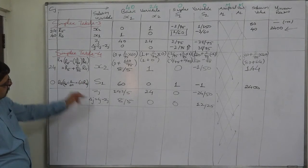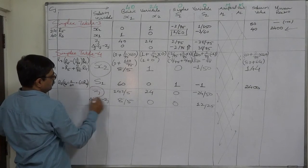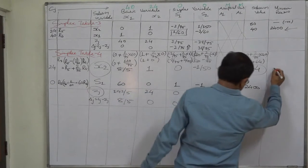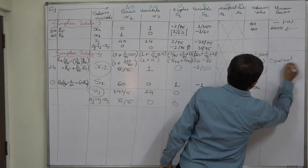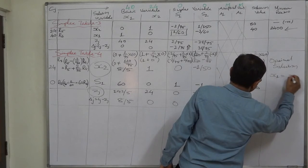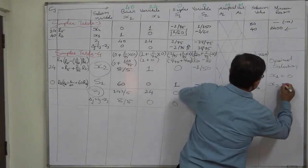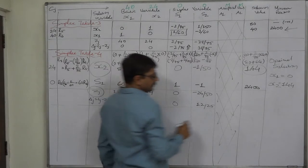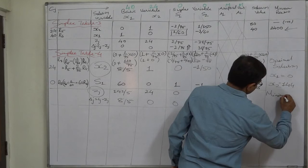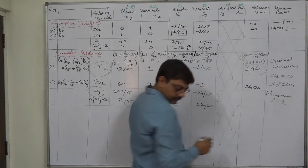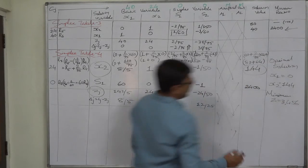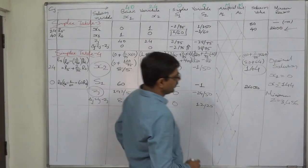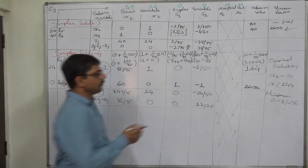This is the optimal solution. Since X1 is not a solution variable, X1 equals 0. X2 equals 144, and 144 into 24 gives the minimum value of Z. Minimum Z equals 3456. I have the multiplication of 144 and 24 readily available, so I can write it quickly — you can verify it on your calculator. This is the optimal solution.